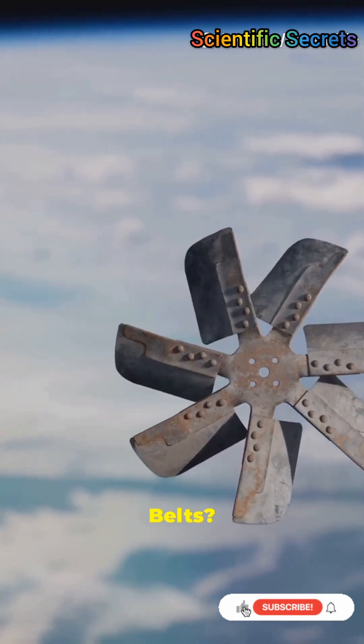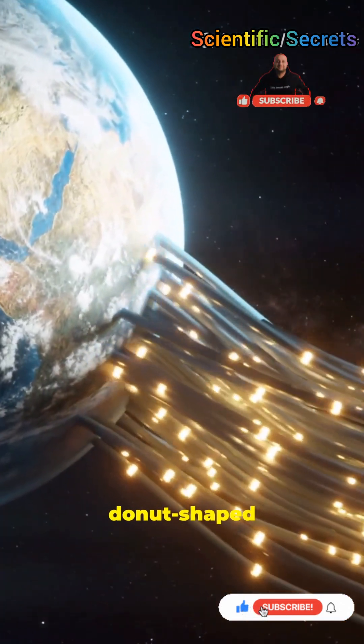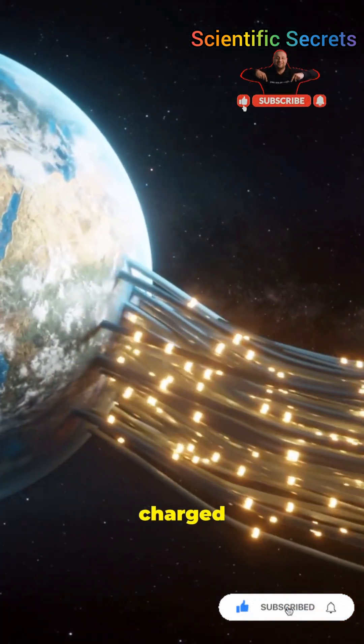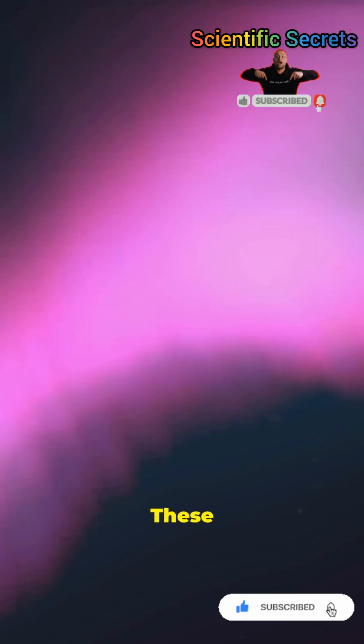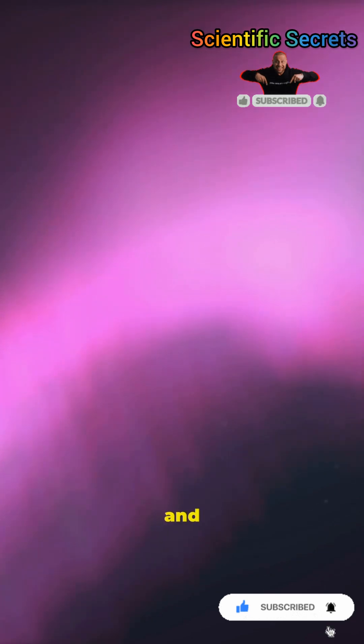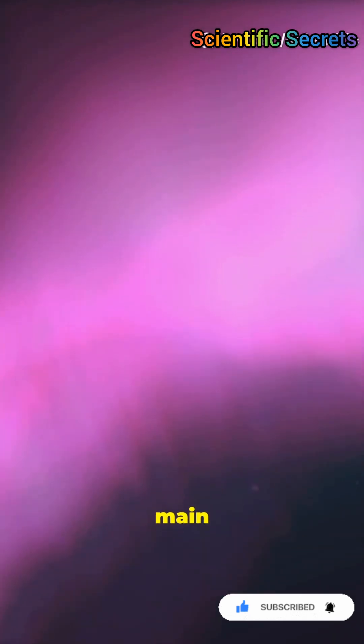What are the Van Allen belts? The Van Allen belts are two donut-shaped regions of trapped charged particles that encircle the Earth. These particles, primarily electrons and protons, originate from two main sources.